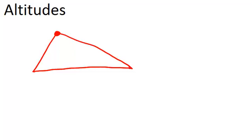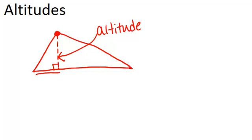From this vertex, the altitude would be this. The altitude is always a line that is perpendicular to the side opposite the vertex. An altitude will always be the height of the triangle from the opposite base.